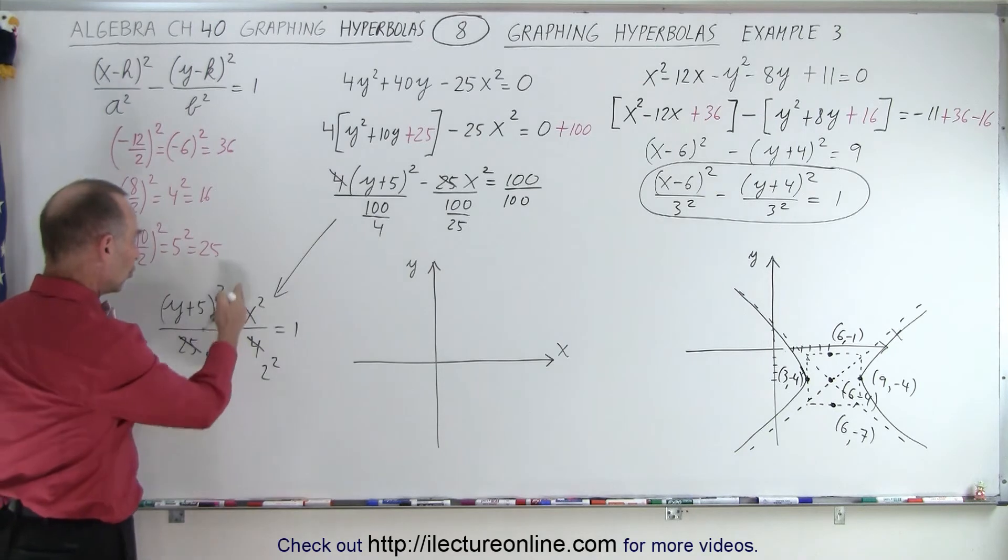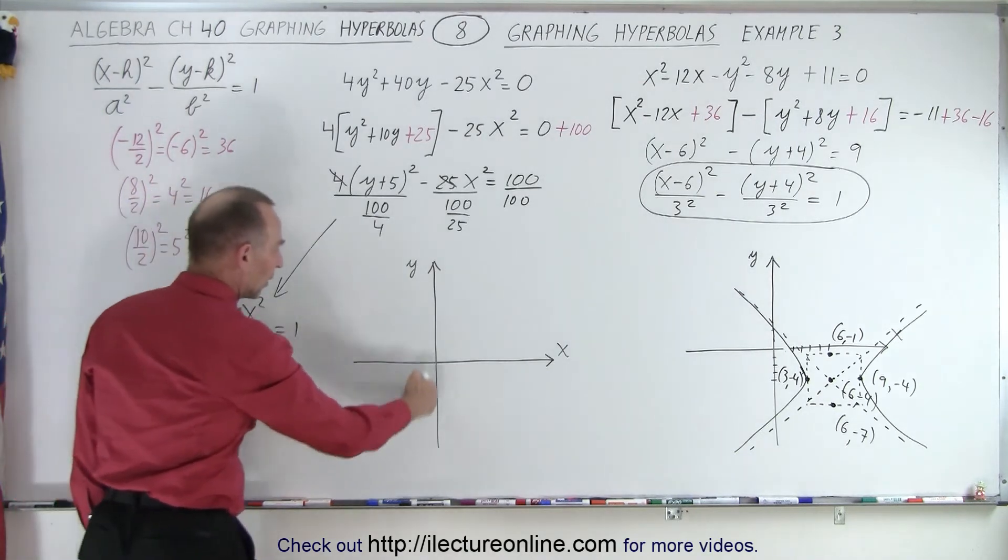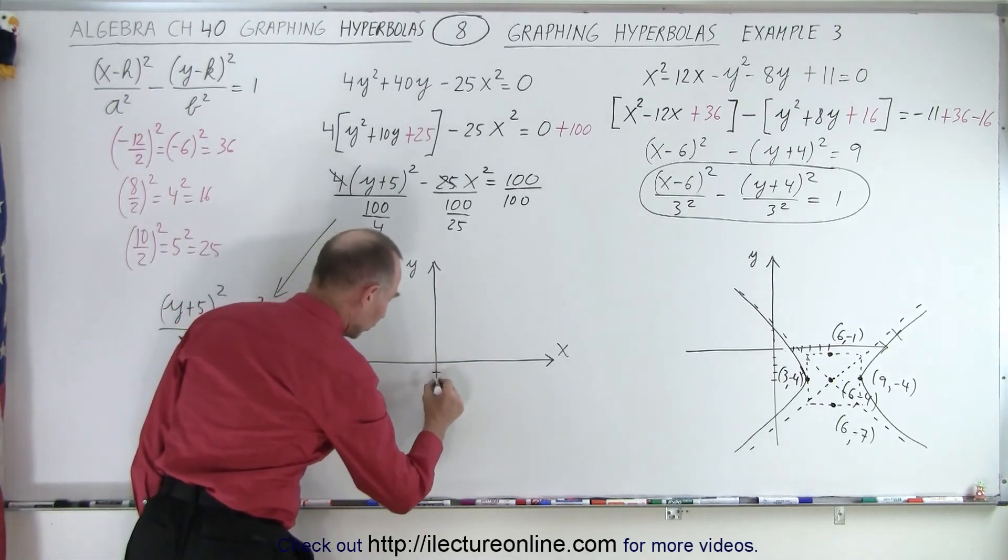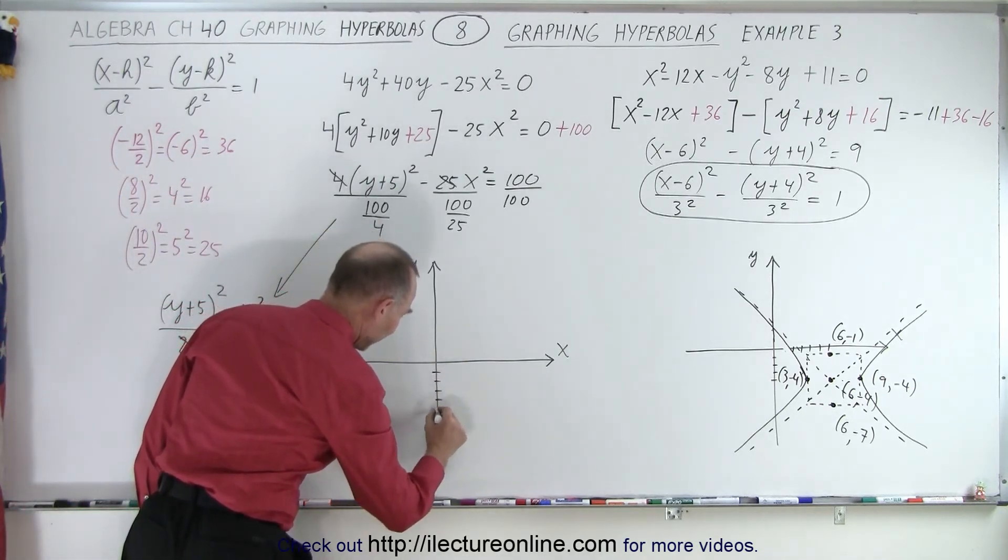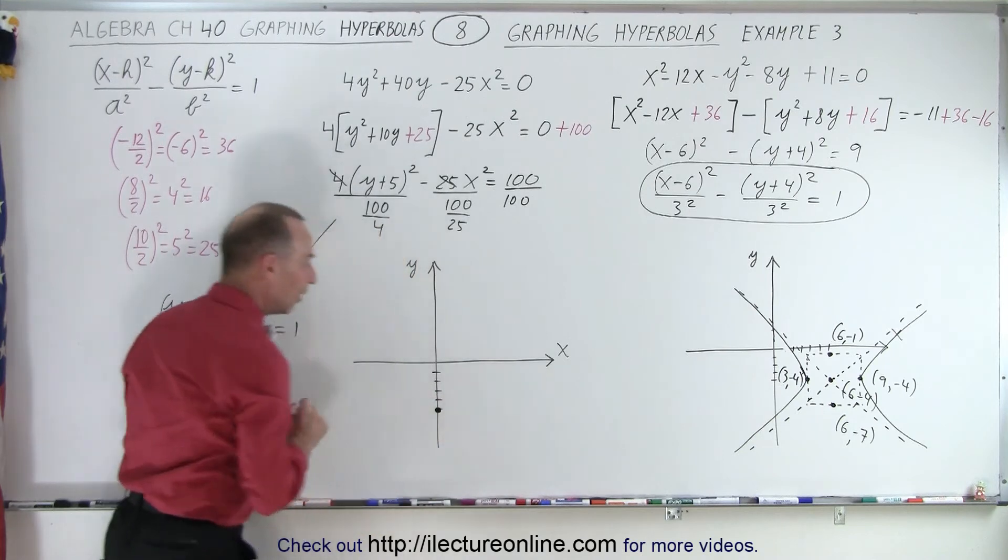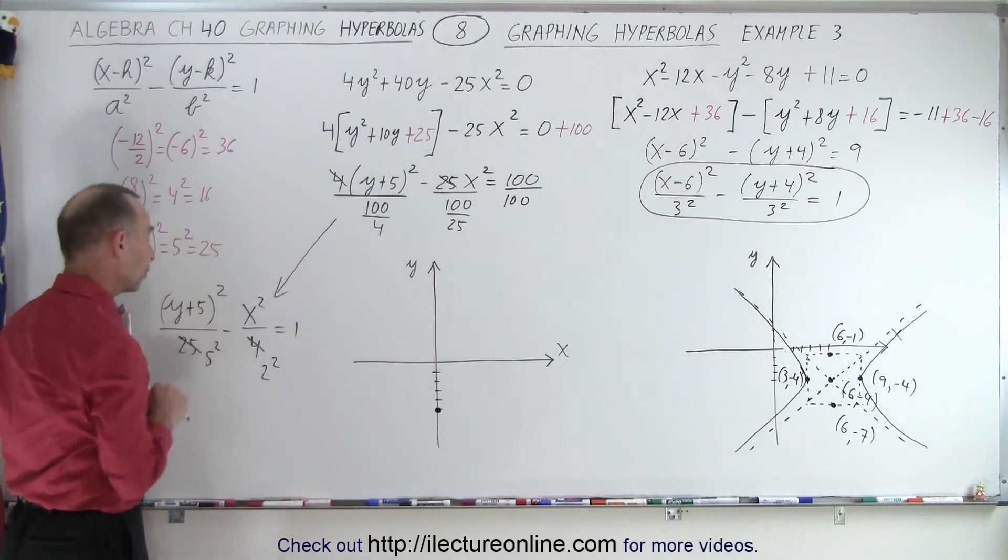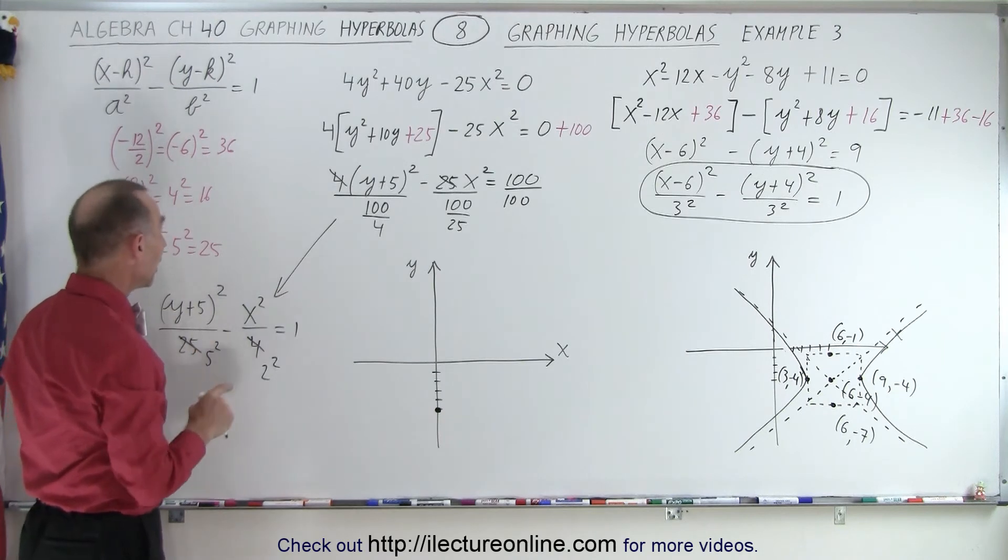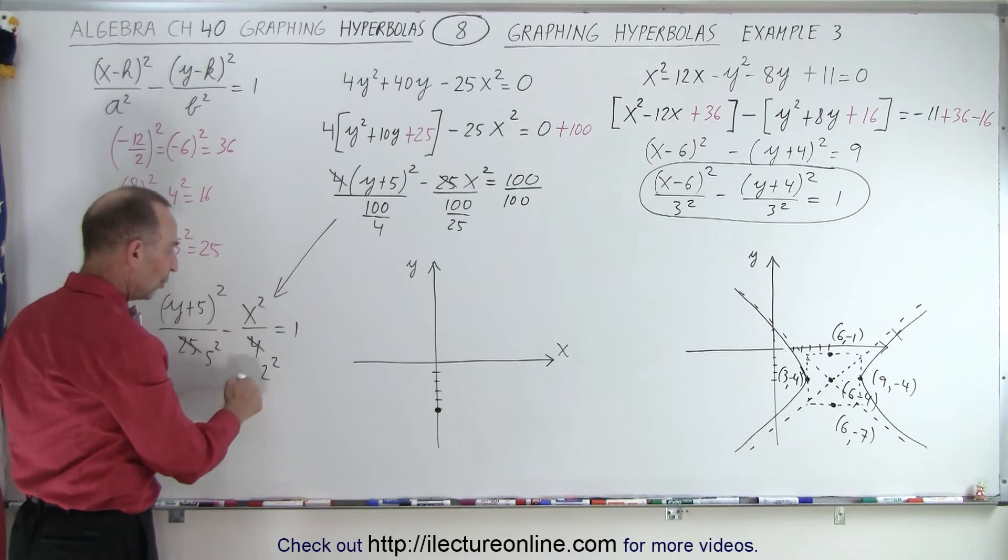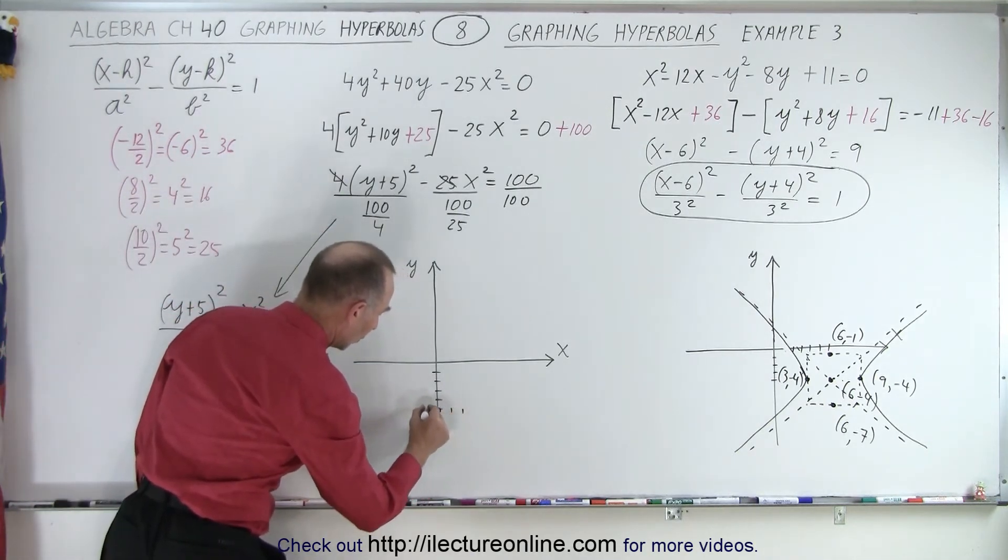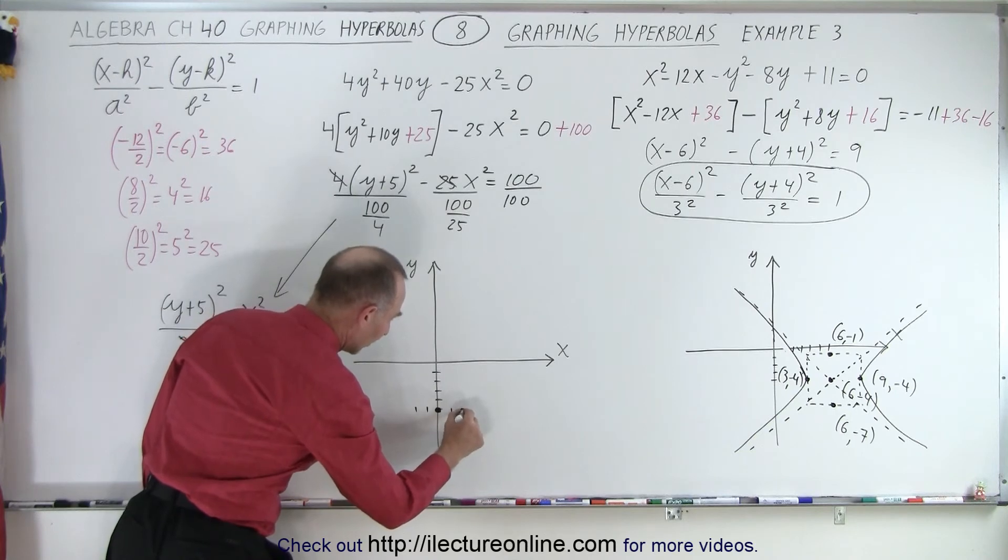In the x direction, there's no shift, so it'll be somewhere along the y-axis. But in the y-axis, there's a shift downward of 5 units. So that's the center of the hyperbola. No shift in the x direction, but a shift downward of 5 in the y direction. Now, this here is A, and this here is B. A means we go to the right, to the left, 2 units. We draw the points right there.